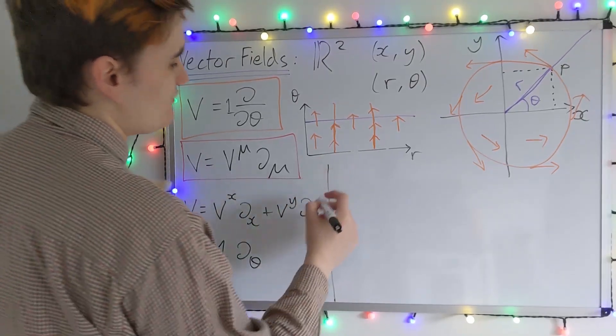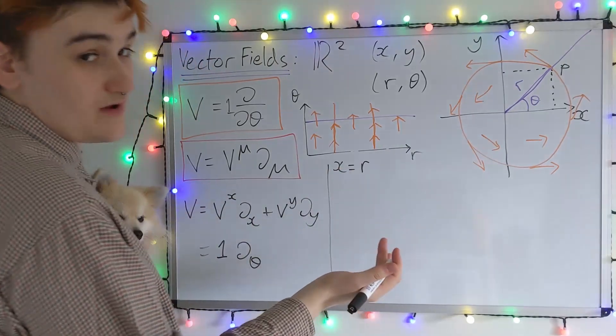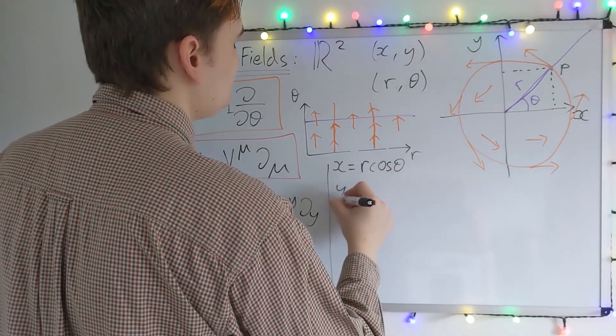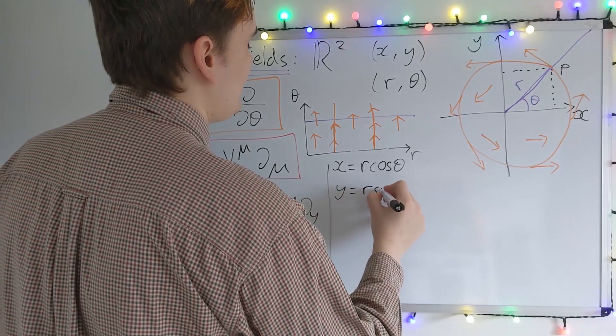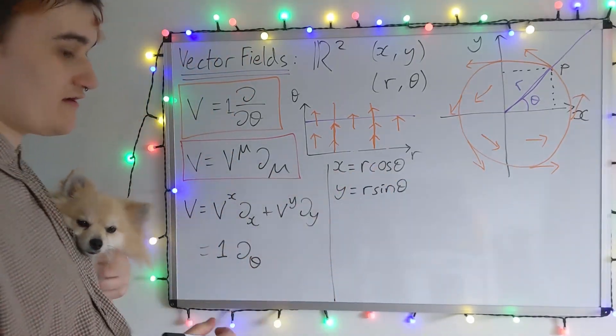So we essentially need to write down an expression for this D by Dθ basis vector in terms of the X and Y basis vectors. So to do that, we need to remember a few things. We need to remember what are coordinates or how they're defined and their transition function. So the expression I'm writing now is how we go between the R and theta to the X and Y coordinates.